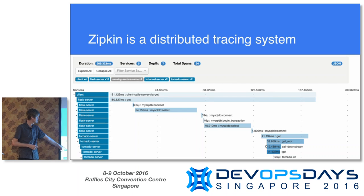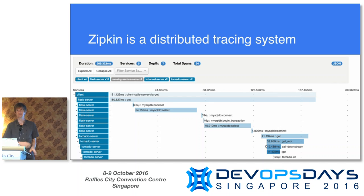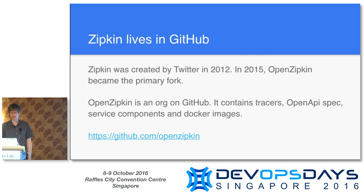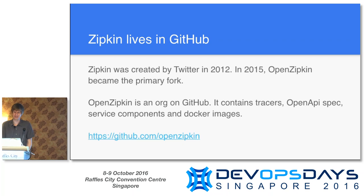The service list ideally works with whatever your discovery services are, so the names are coherent and you have a direct map with all your other tools. You can query to see, for example, that a Flask server was involved ten times in an operation. Zipkin itself lives on GitHub — it first appeared there in 2012 when Twitter open-sourced it, then we moved it to an org called OpenZipkin in 2015 because the name 'zipkin' was already taken on GitHub.